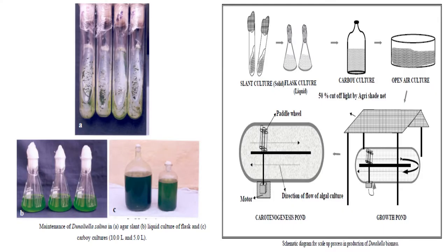For mass multiplication of Dunaliella, the culture from the slant is transferred to a conical flask, then mass multiplied and transferred to the carboy culture, then to an open-air semi-culture tank, and from there either to aquarium tanks or directly to the growth pond, also called the raceway pond.